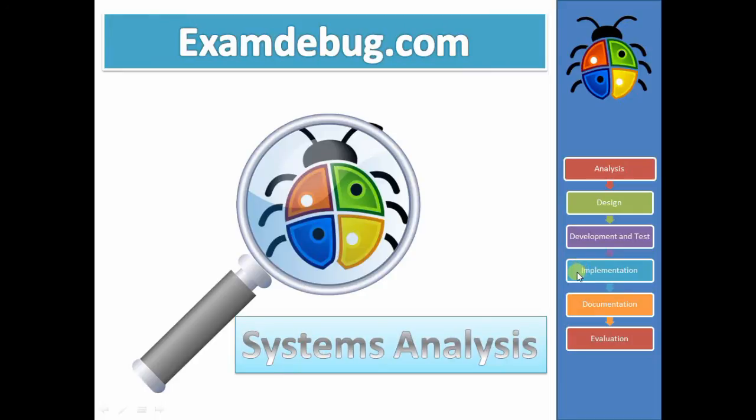Implementation. We're talking about putting the new system into place. And we're talking about the four types of implementation. That is direct, parallel, pilot, and phased. And again, you have to talk about the advantages and disadvantages of each.